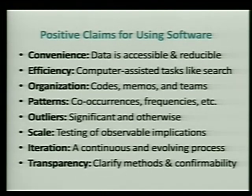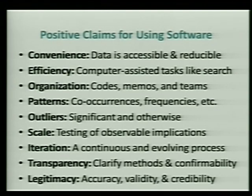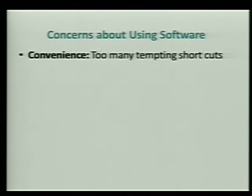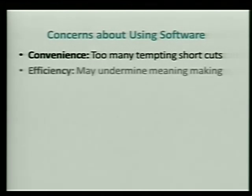Remember: convenience, efficiency, organization, patterns, outliers, scale, iteration, transparency, and legitimacy — because all of those things are also the arguments against using software. It's the exact same things. When you create tools that allow people to avoid certain kinds of tedious or mundane work, some people argue you really undermined the pure essence of qualitative research and replaced it with a shortcut that will lead you to invalid or false inferences. Similarly, the fact that you can do a lot with a lot may undermine the fact that sometimes the most important things you discover in qualitative research are rare.